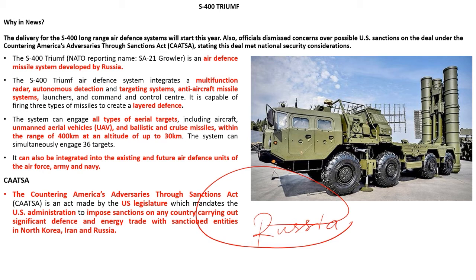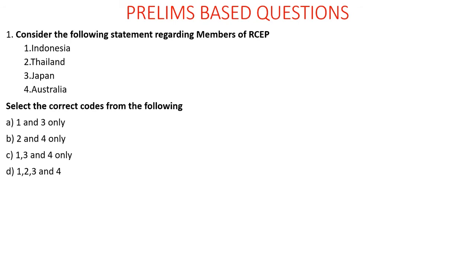CAATSA — Countering America's Adversaries Through Sanctions Act — is a U.S. law that mandates the U.S. administration to impose sanctions on any country carrying out significant defense and energy trade with sanctioned entities in North Korea, Iran, and Russia. The USA has given sanctions on India because India is buying the S-400 from Russia.